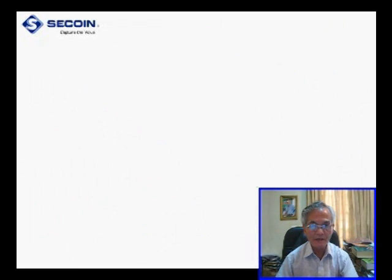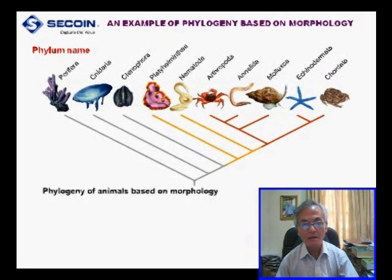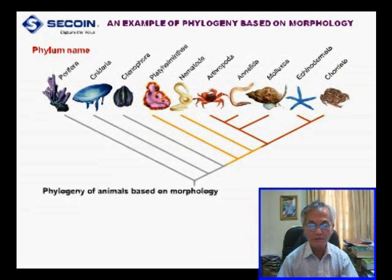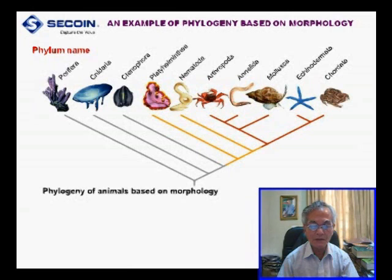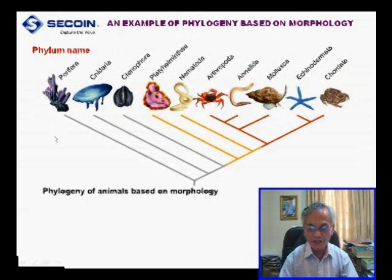In the previous slide, we talked about the phylogenetic tree of a plant based on molecular technique. But for better understanding of what phylogenetics is, it is better to talk about another example — a phylogenetic tree of animals based on morphology. This is a phylogenetic tree of the kingdom Animalia.